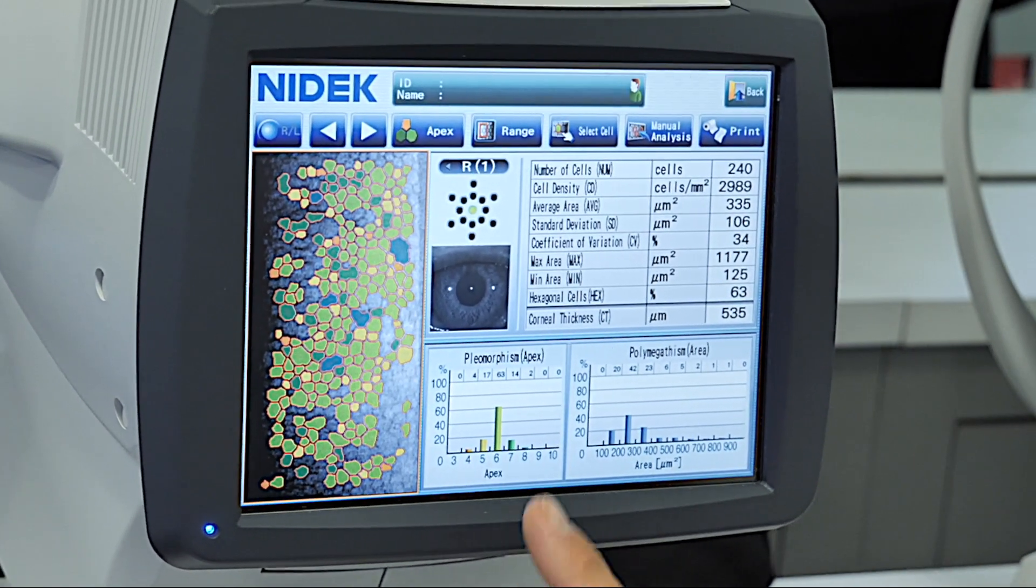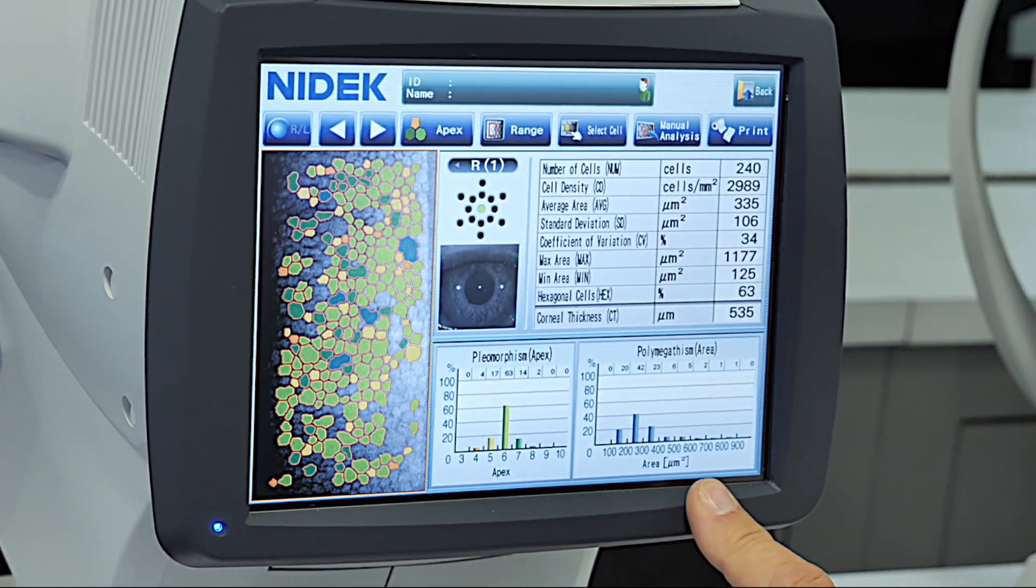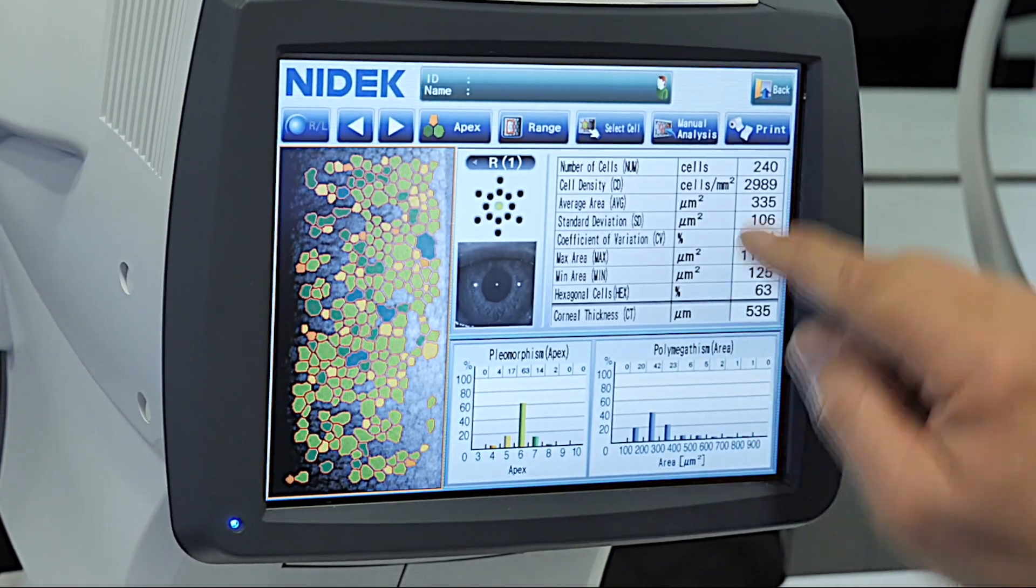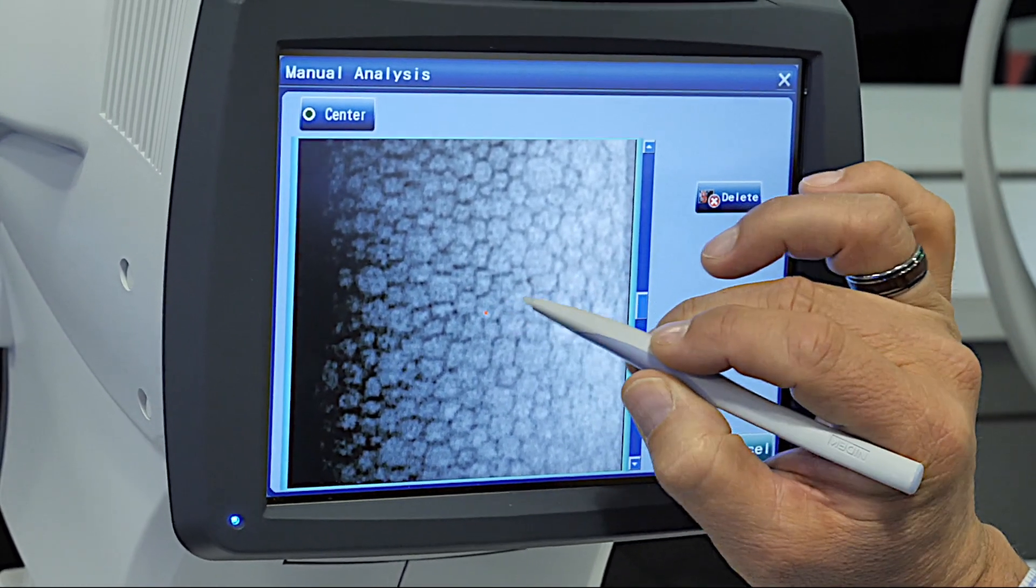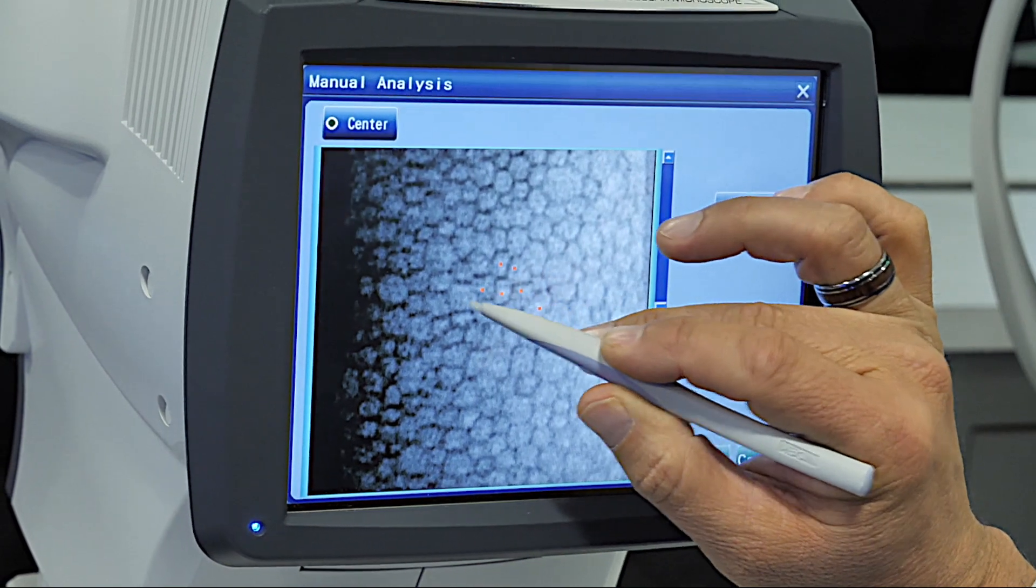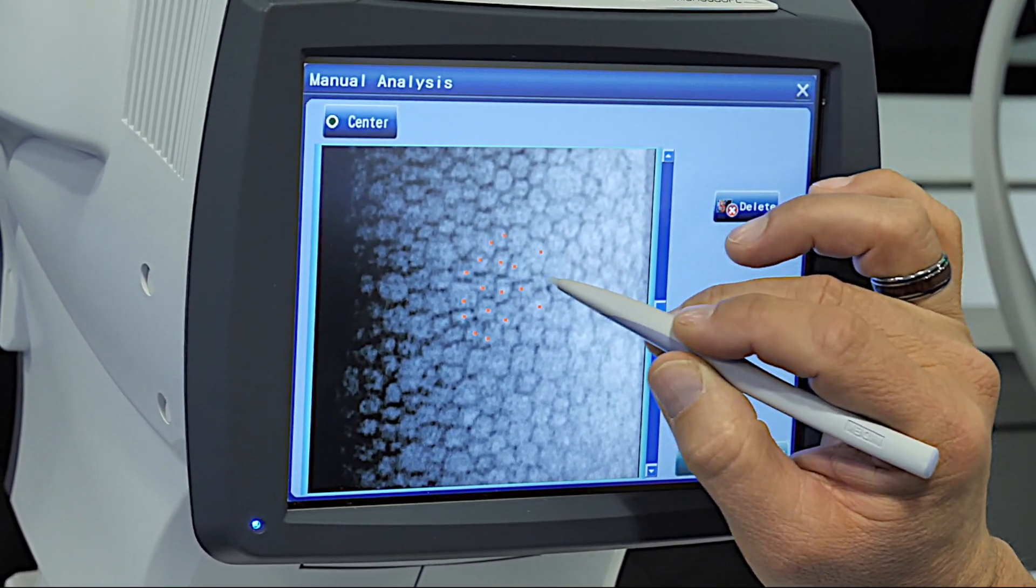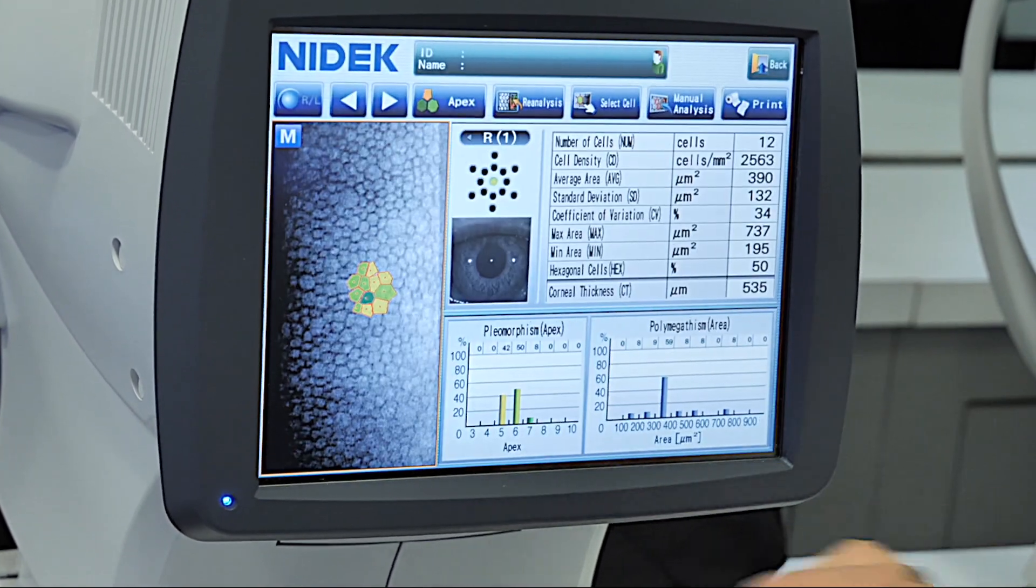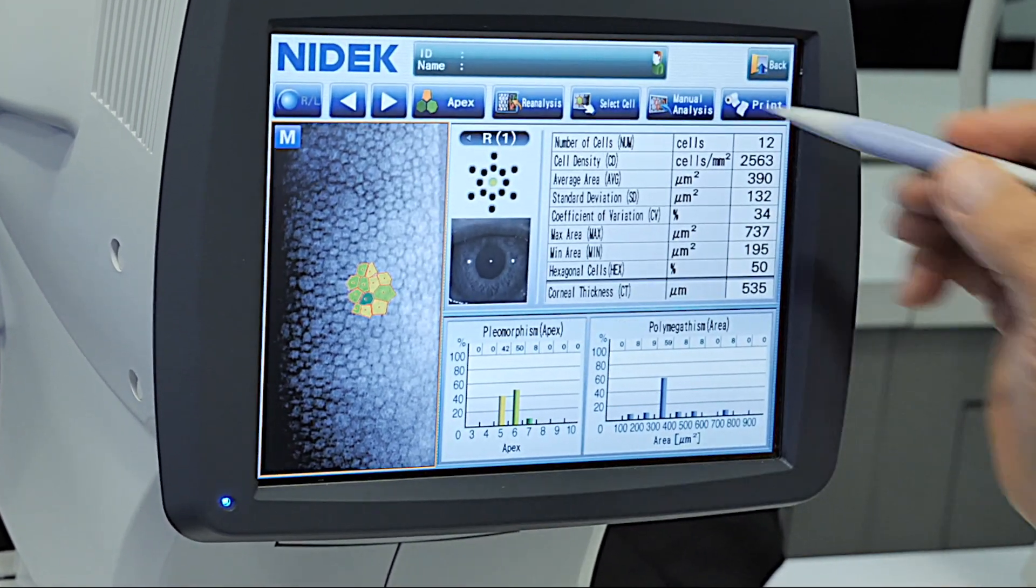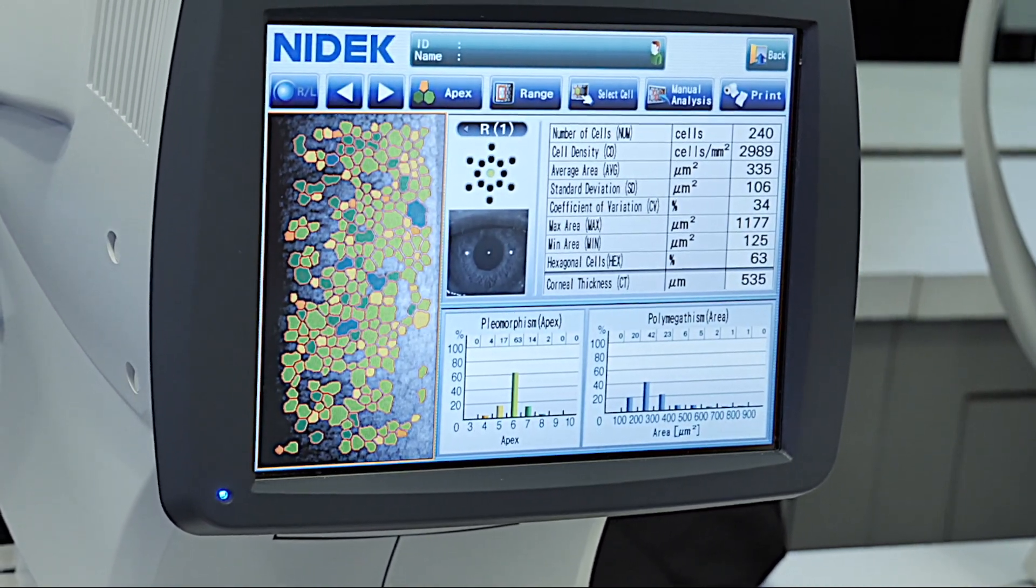With all that information, we're looking at pleomorphism and polymegathism. Not only does it do auto-calculation and analysis, but we can also select the cells if we would like to do a manual count. Sometimes it could fail if the patient has a lot of corneal pathology. So by selecting a certain number of cells, we can do an actual manual count, or you can select reanalysis to reanalyze your automatic analysis.